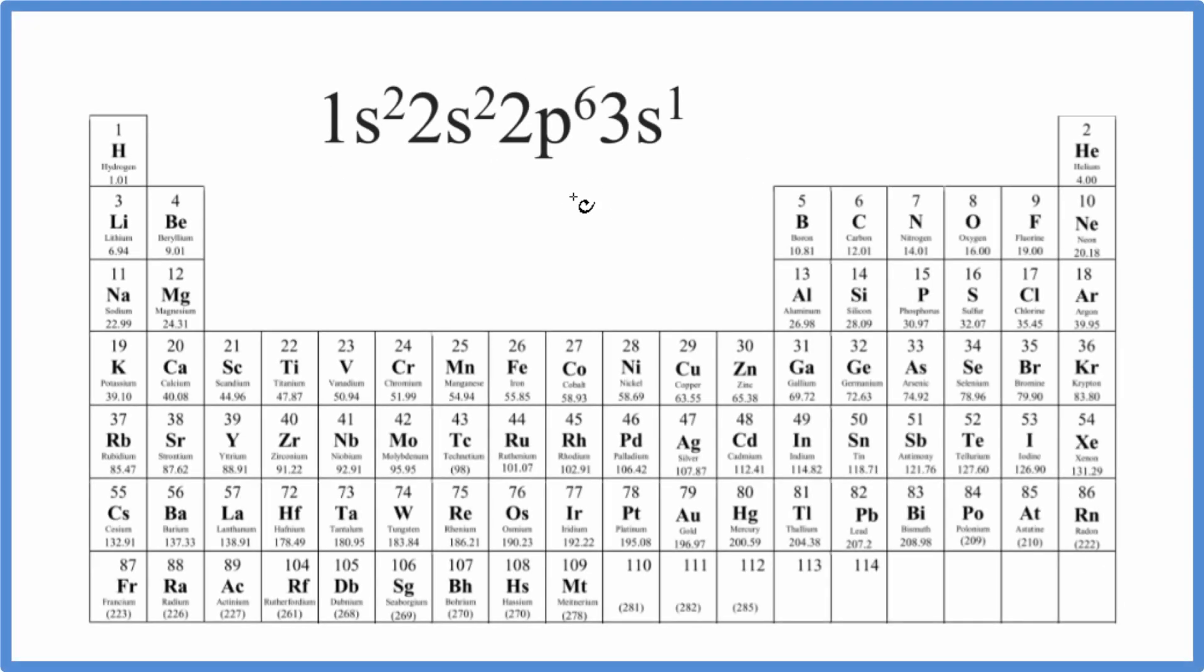In this video, we'll figure out what element on the periodic table corresponds to the electron configuration 1s2, 2s2, 2p6, 3s1.